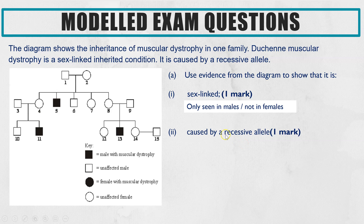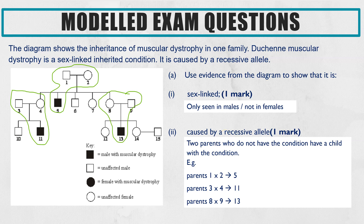For this type of question, you can either write out your explanation and evidence generally, or you can give exact examples from the diagram. We've actually got three examples where we see this pattern of parents who do not have the condition but a child who does. You could say parents one and two have child five who does have the condition — any of those specific examples would be valid evidence.